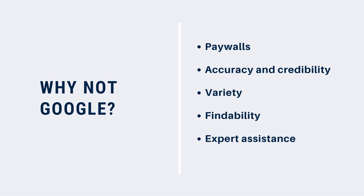Second is credibility and accuracy. We know that anyone can publish anything on the internet, and not all of it is reliable. It can be difficult to tell if a website or page is accurate and credible. The resources you'll find using Catalyst have been carefully selected to support what you're learning in the classroom and the assignments you're working on. They come from reputable publishers and vendors, so you can feel confident you're looking at high-quality, accurate information.